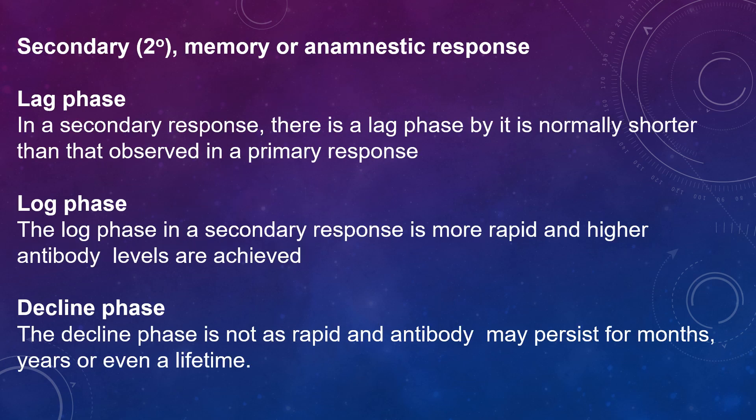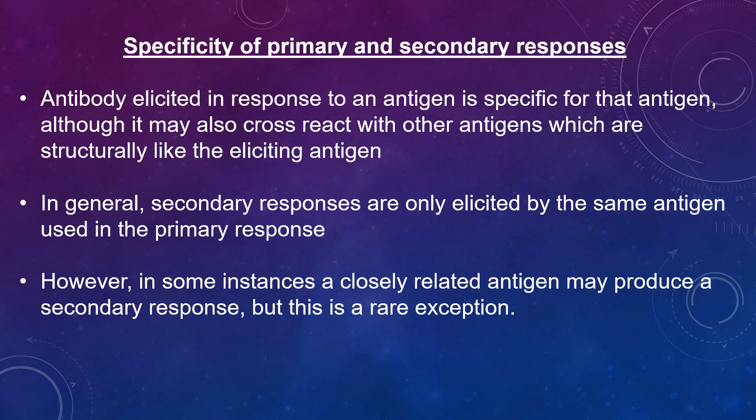For the secondary or anamnestic memory response, it also involves a LAD phase and a steady state phase. In the secondary response, the LAD phase is normally shorter, and higher antibody levels are achieved. The decline phase is not as rapid. Regarding specificity, antibodies are elicited in response to an antigen and are specific for that antigen, although they may also react with other antigens that are structurally similar to the eliciting antigen. In general, secondary responses are only elicited by the same antigen used in the primary response.